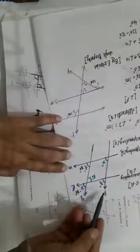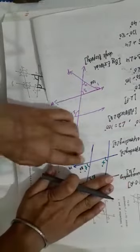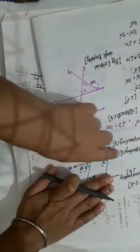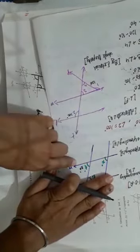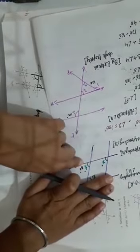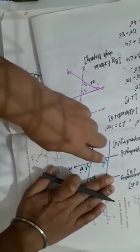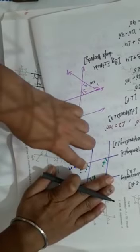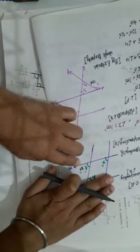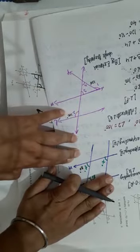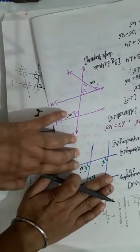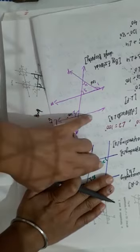Similarly, M is the transversal for P and Q. So X and T are corresponding angles. Since T = 80°, X = 80°. X = T = 80°, reason: corresponding angles.